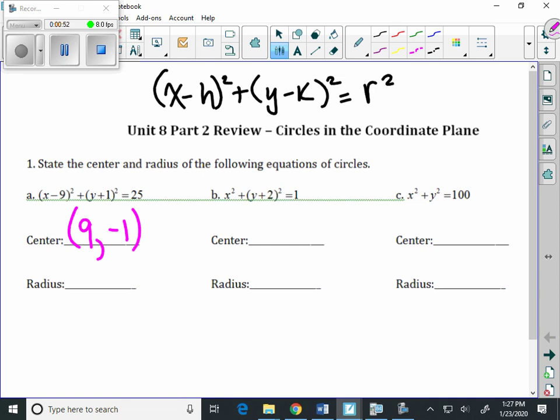And then lastly, the radius—well, the square root of 25 is 5.